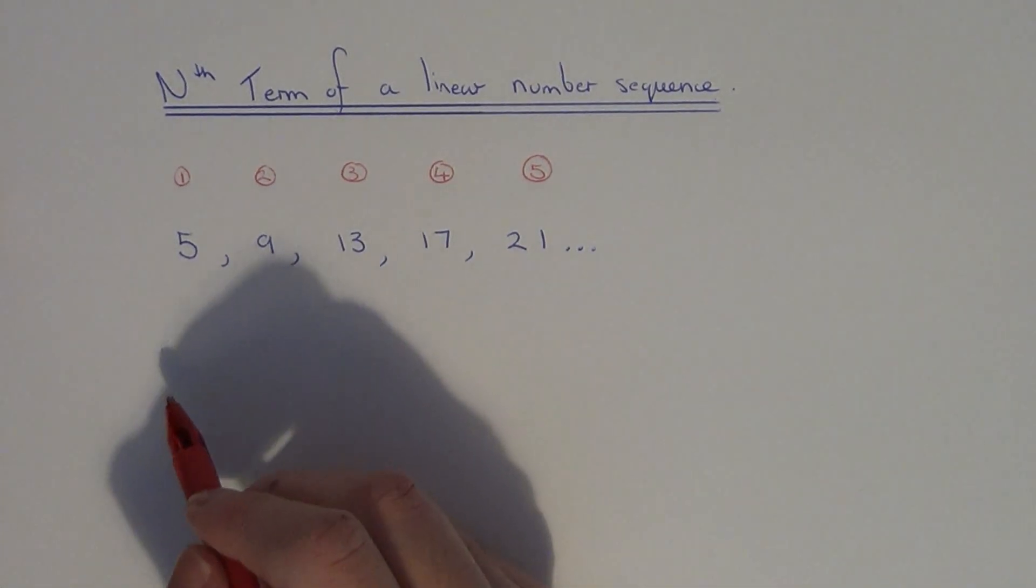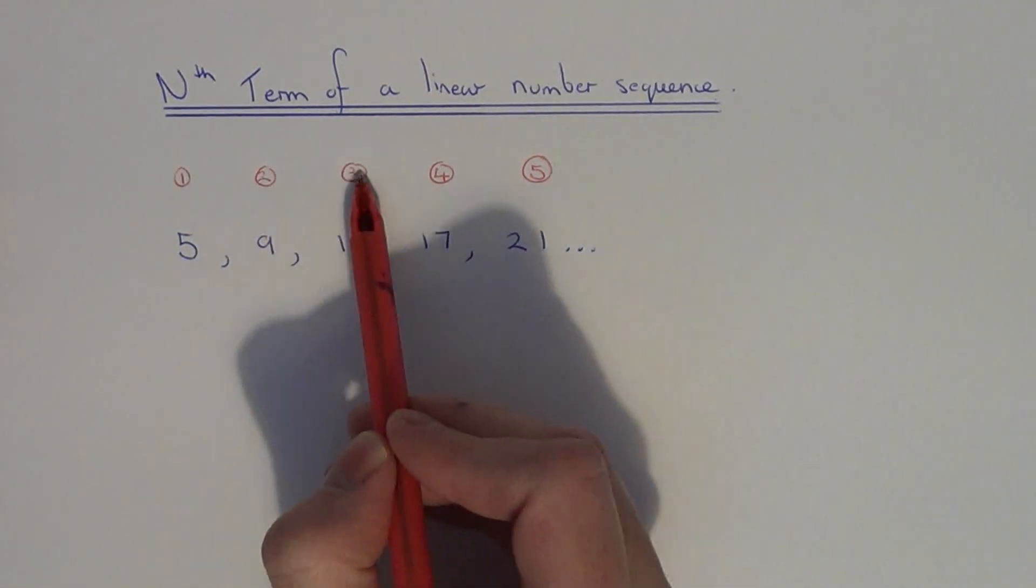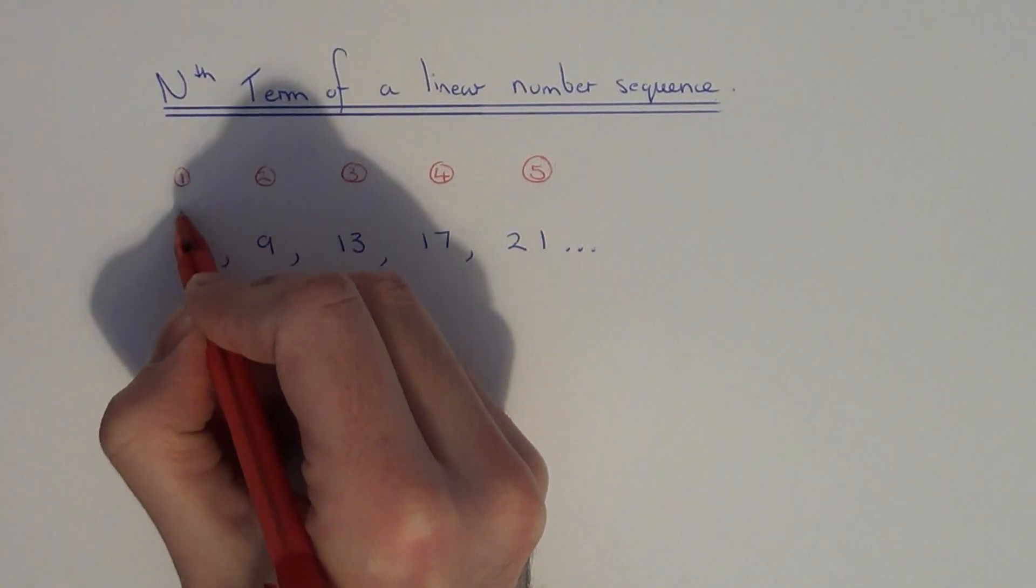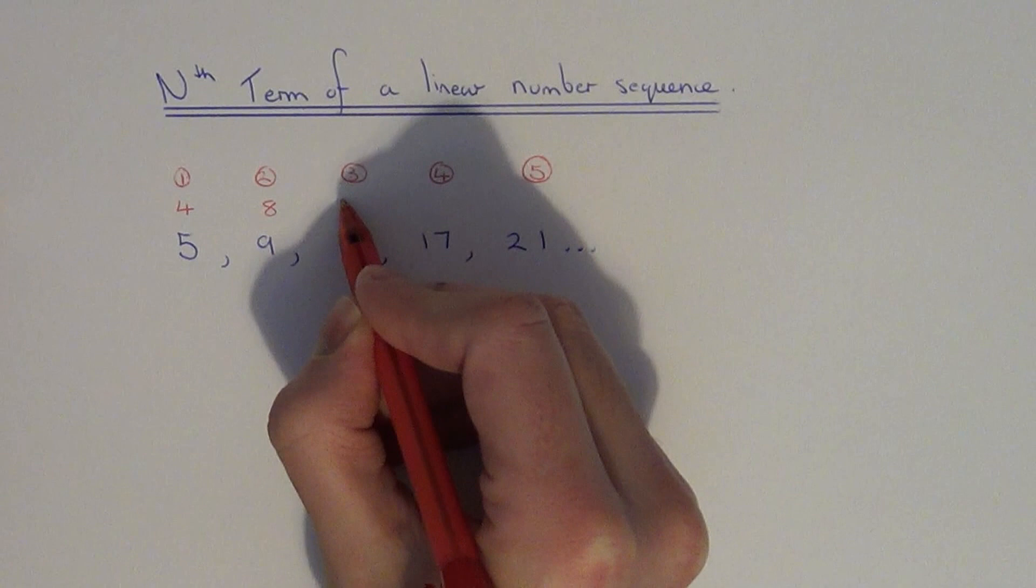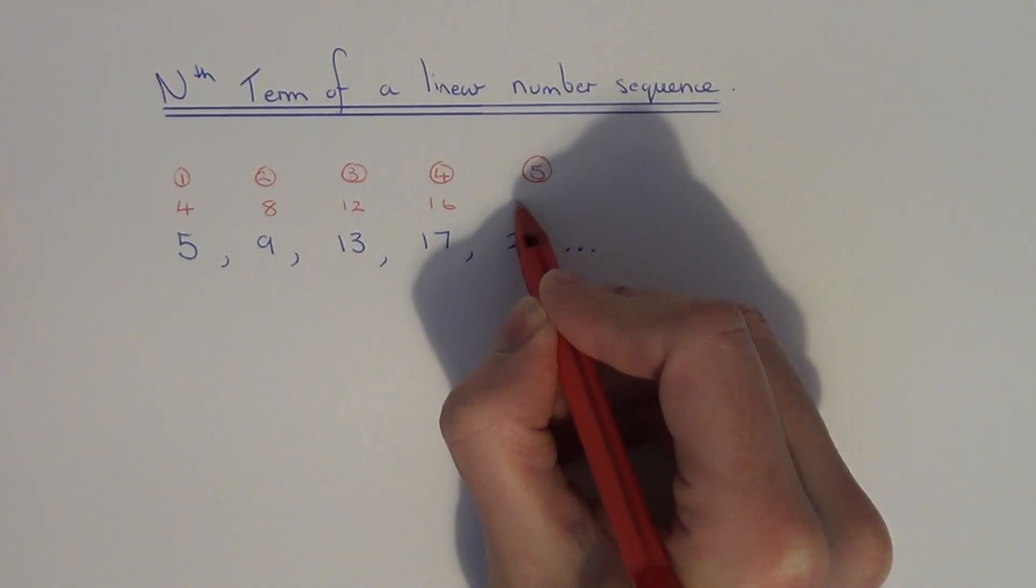So this tells us the nth term has something to do with the 4 times tables. So what I'm going to do is times all these position numbers above the sequence by 4. So 1 times 4 is 4, 2 times 4 is 8, 3 times 4 is 12, 4 times 4 is 16, 5 times 4 is 20.